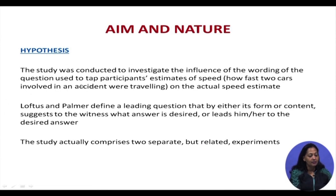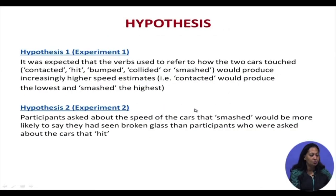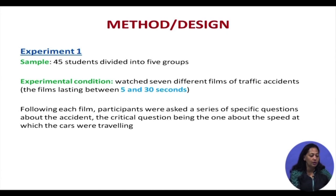The hypothesis was to investigate the influence of the wording of the question used to tap participants' estimates of speed — how fast two cars involved in an accident were travelling — on the actual speed estimate. Loftus and Palmer defined a leading question as one that either by its form or content suggests to the witness what answer is desired or leads him or her to the desired answer. In Experiment 1, 45 students were divided into 5 groups of 9 each, who watched 7 different films of traffic accidents lasting between 5 and 30 seconds each.